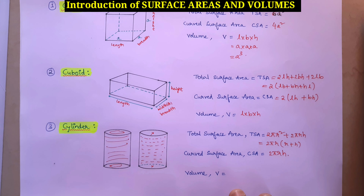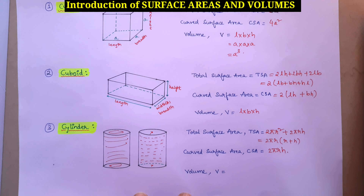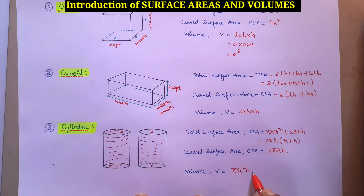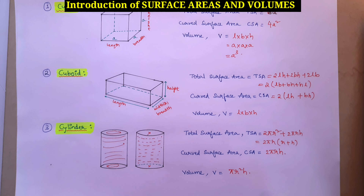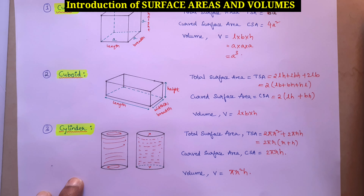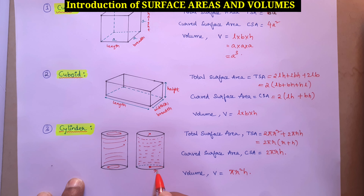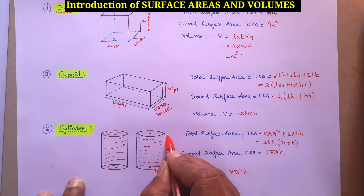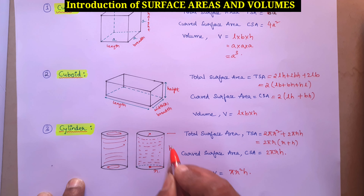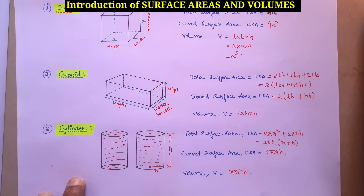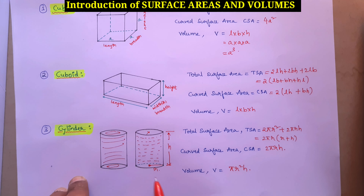When it comes to volume of a cylinder, the formula is πR²H, where R is the radius and H is the height of the cylinder.